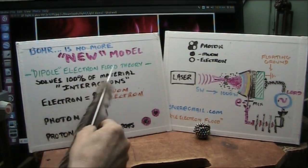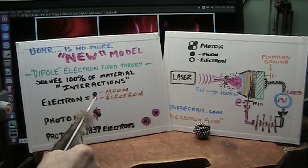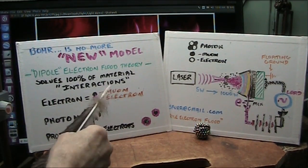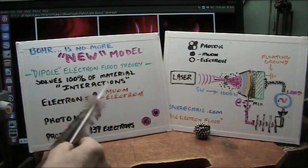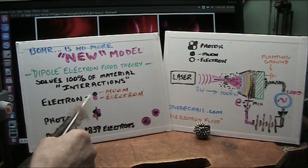Dipole electron flood theory says there is nothing but electrons, and they consist of the electron glowy explosive portion and then the muon attached. They call them electron and muon neutrinos in this configuration. Photons are nothing more than two of them back to back, because that's nothing more than a bar magnet.